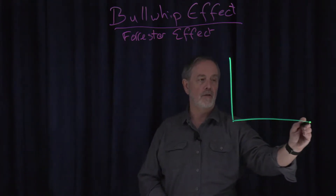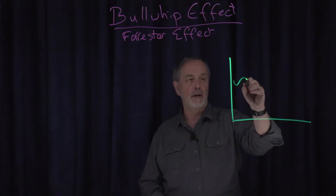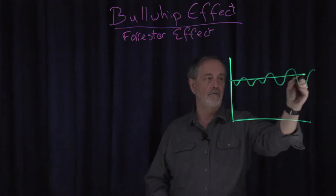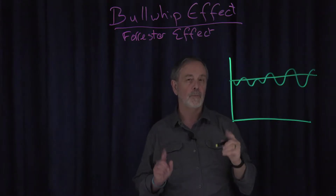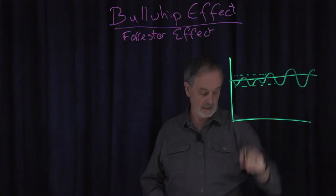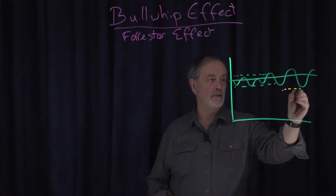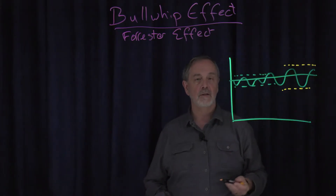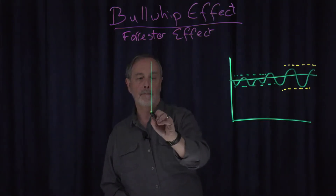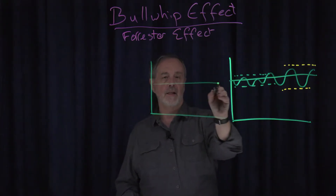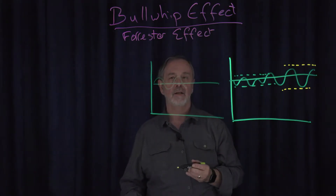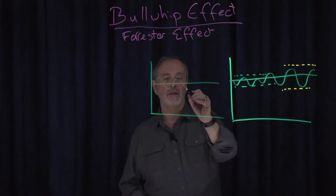Simply put, if we look at the profile of demand in our customer market, we'll see that it varies a little bit around an average point. What the bullwhip effect tells us is when we see that variation start to increase, this has a really important impact on suppliers. The suppliers are placing their orders and their demand through their supply chain is fundamentally trying to reflect what happens in the retail market.